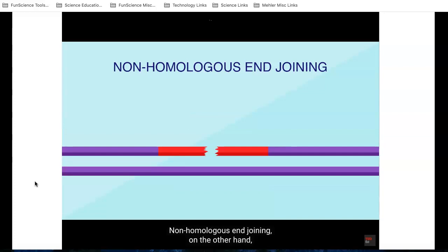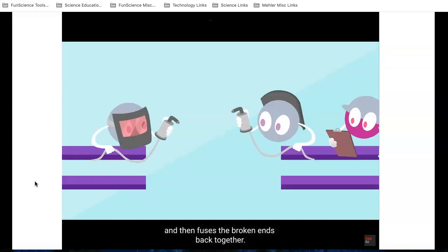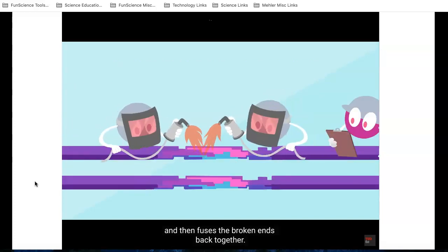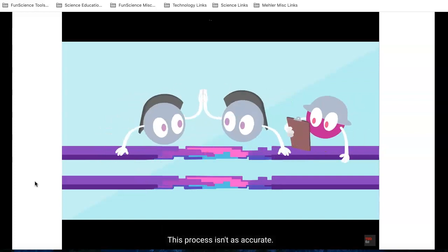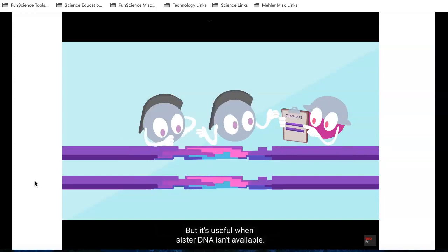Non-homologous end joining, on the other hand, doesn't rely on a template. Instead, a series of proteins trims off a few nucleotides and then fuses the broken ends back together. This process isn't as accurate. It can cause genes to get mixed up or moved around, but it's useful when sister DNA isn't available.